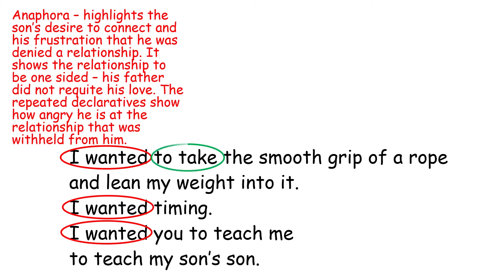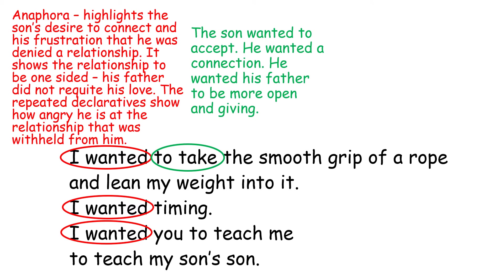As we take a look at the next couple of words — 'I wanted to take' — the word 'take' shows that the son wanted to accept this thing that his father seems to be interested in: the bell ringing. It suggests that he wanted a connection, that he wanted his father to be more open and more giving. He wanted to be a part of his experiences and to share those memories with his father.